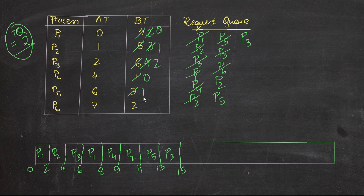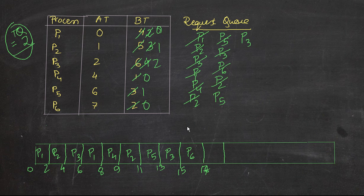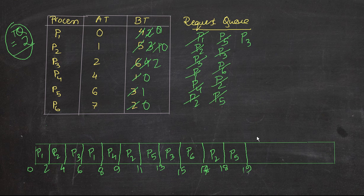Then we execute P6, which has just 2 units left — running from 15 to 17. P6 is done, so we don't queue P6 again. Then we execute P2, which has just 1 unit — from 17 to 18. P2 is completed fully so we don't need to queue it. Then we have P5 with 1 unit remaining — from 18 to 19 — and it's done.